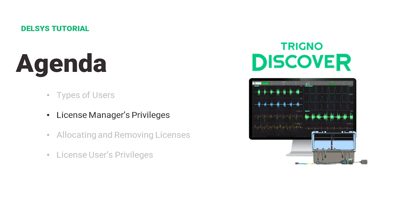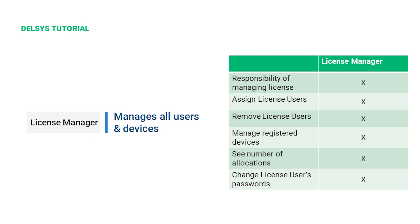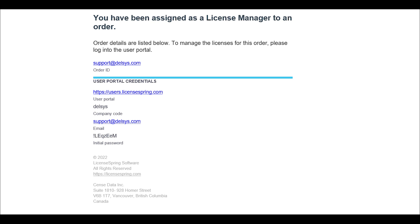This section will cover all the privileges available to a license manager. A license manager can log in and look at the information regarding their license and the activations of that license. License managers are the people or person allocated the responsibility to manage their Trino Discover license. License managers can assign and remove other license users and manage registered devices, and can change their own and other users' passwords. When a license manager signs up to Trino Discover and provides their access code to Delsys, an automated email is sent to the email address provided with the license manager's login credentials.